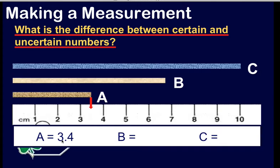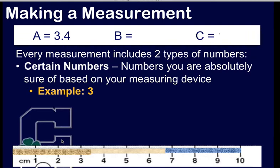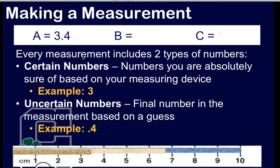Now, let's talk about these two numbers. The three is definitely a certain number. I'm certain that this length of string is longer than three centimeters because it goes past that line. There is a line that denotes three centimeters. But the four that I said, the 3.4, the four is definitely not a certain number. In fact, it's an uncertain number because I guessed it. Every measurement has to have one uncertain number. No more, no less. You can't just simply say that something is three centimeters. You have to say that it's 3.4. And it's all based on whatever measuring device you're using.